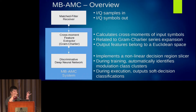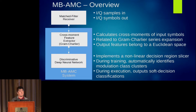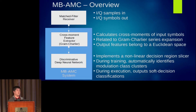Basically, these Euclidean spaces of modulations — these clusters — kind of get fuzzy and wrap around each other. It's a very high-dimensional space, about 30 or 40 dimensions. So we used a deep neural network just to implement a nonlinear decision region slicer, outputting soft decisions as to what modulation an input vector belonged to. We used some simulation to train it.